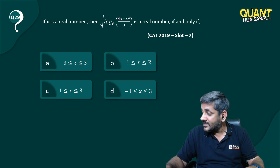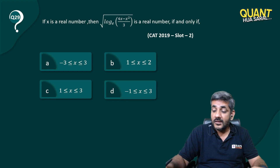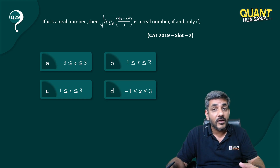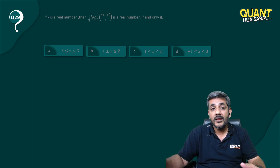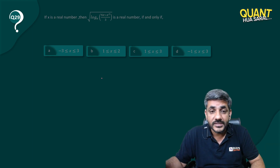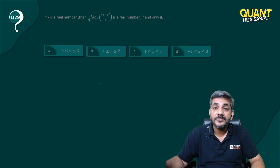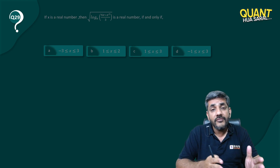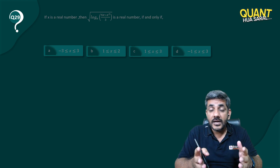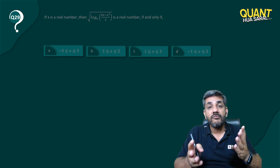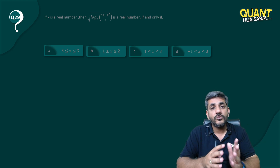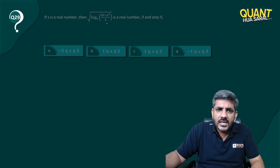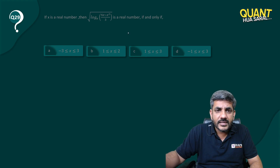How do we do this question? The question has given us a function in logarithm, and there are four answer ranges given to us. We all know that a logarithm is valid only for positive values. You can't have log of a negative number, and you can't have log of zero. So you only have log of positive numbers.